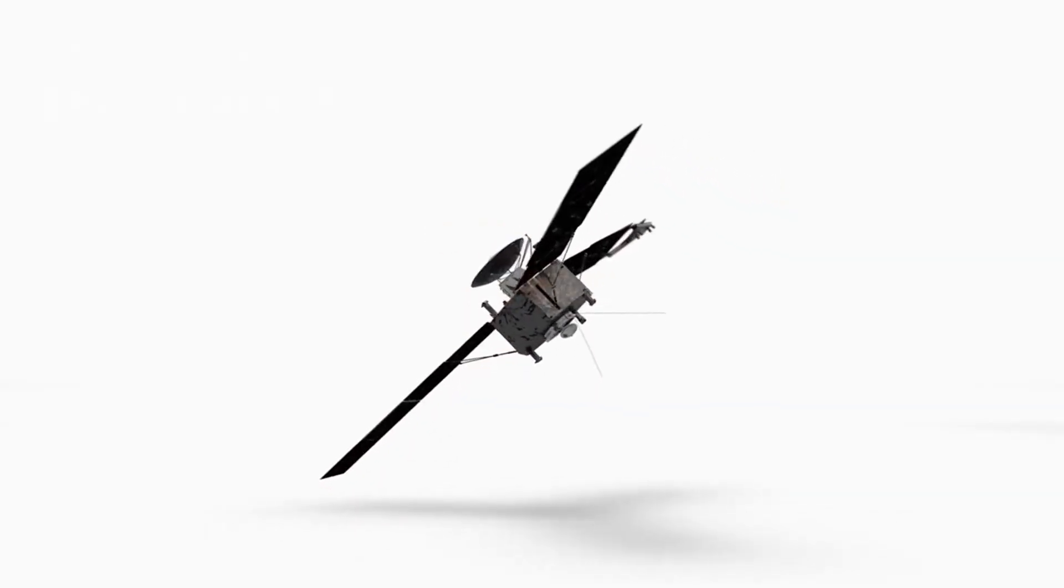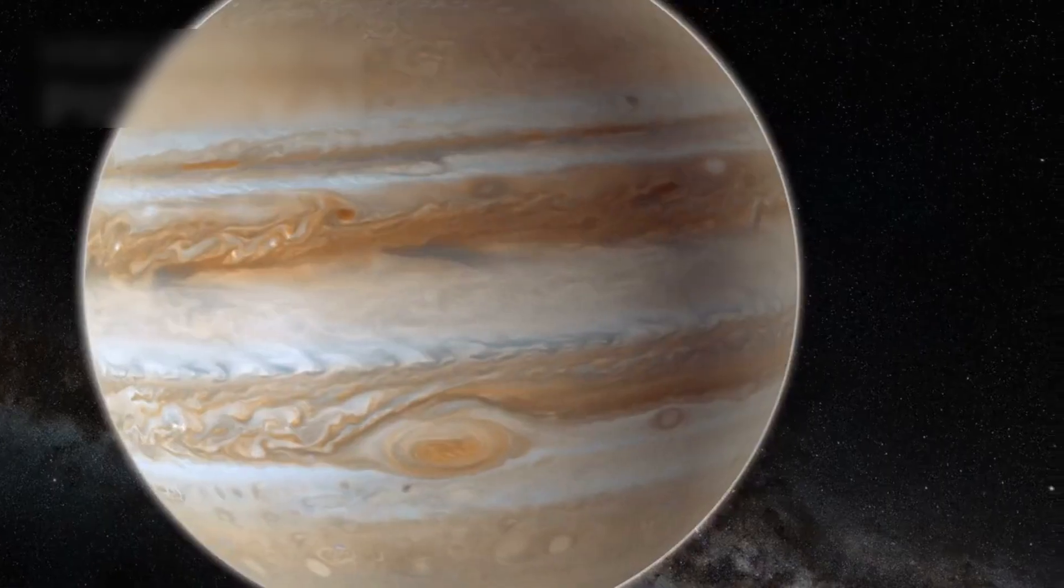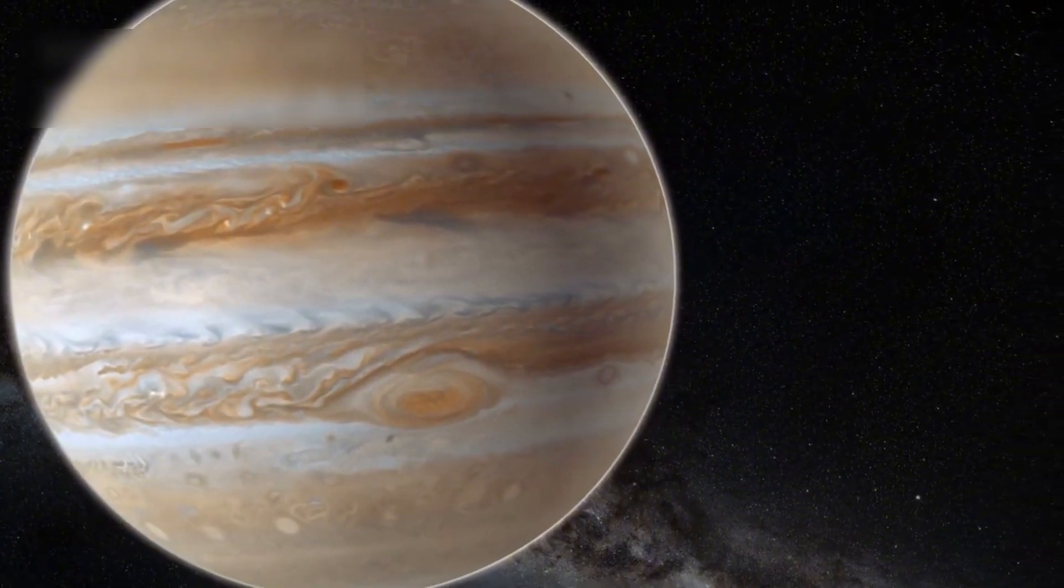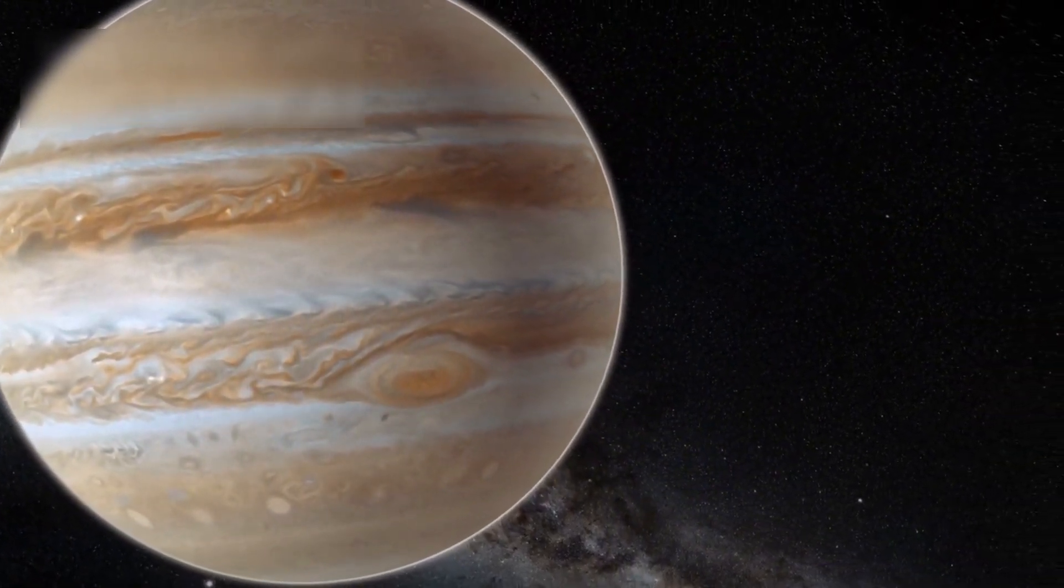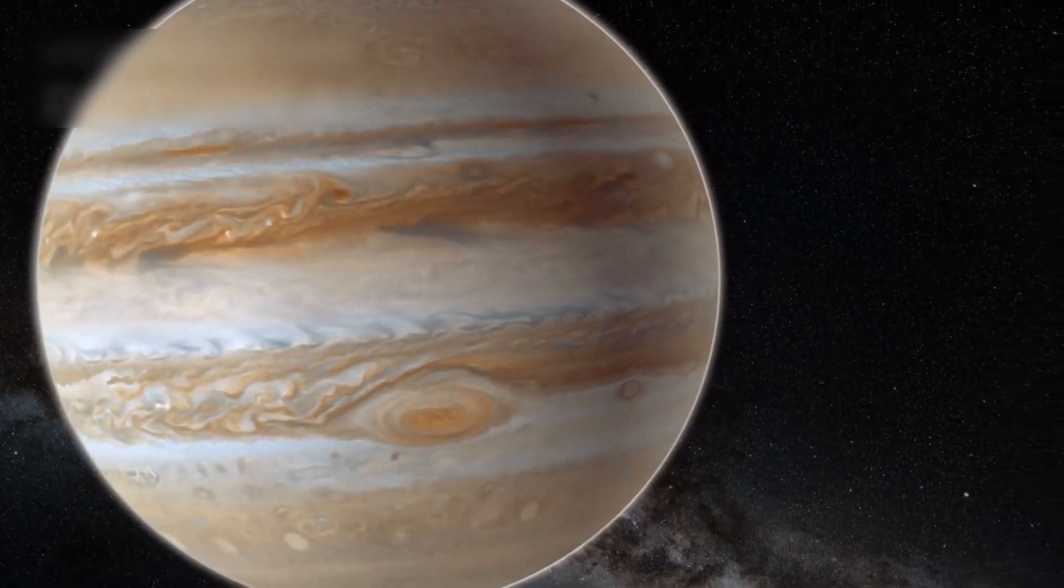Voyager 1 was built for a mission expected to last just five years. Its primary objectives were modest by today's standards: fly past Jupiter and Saturn, gather data on their atmospheres, magnetic fields, and moons, and then fade into history.